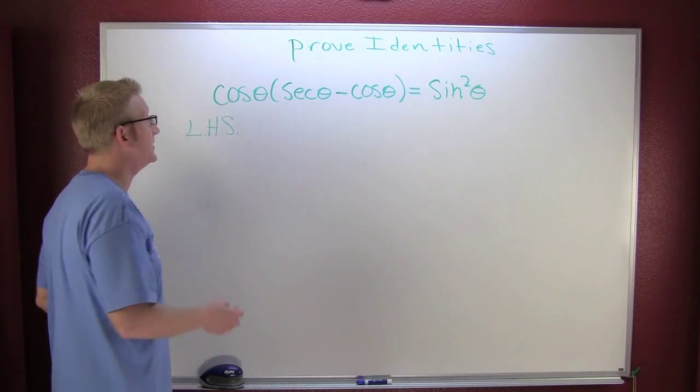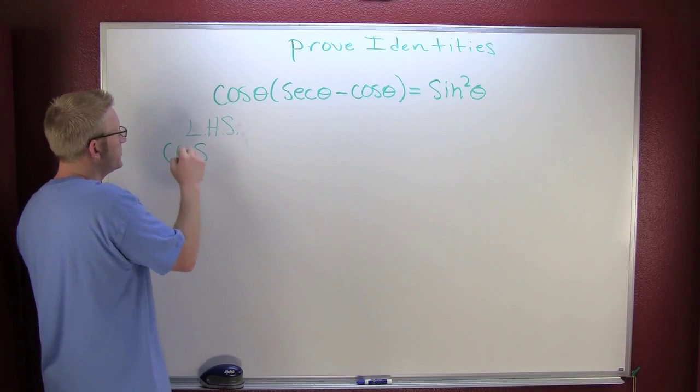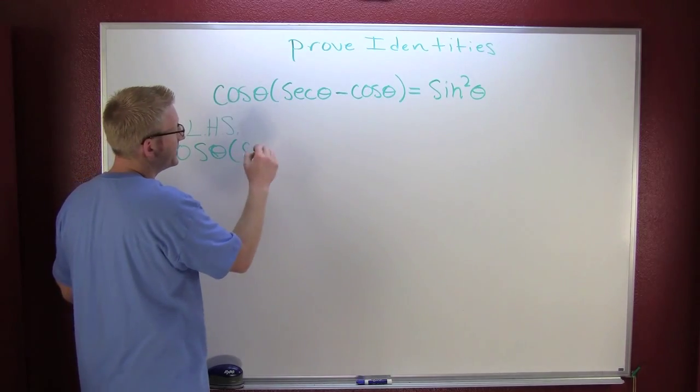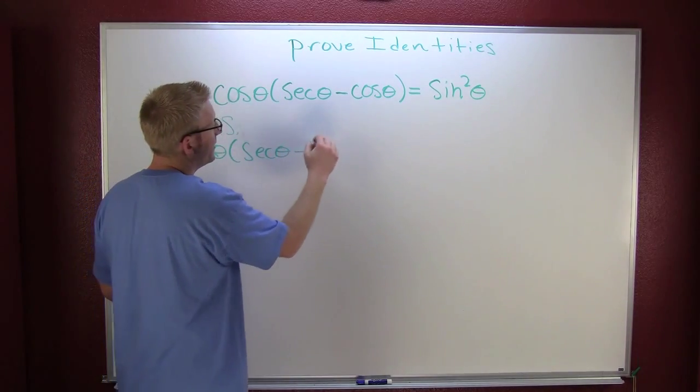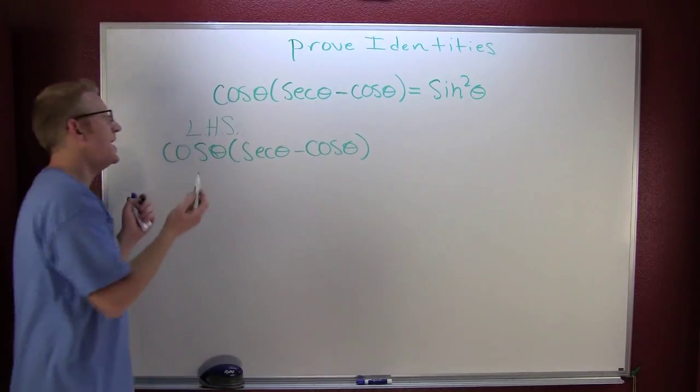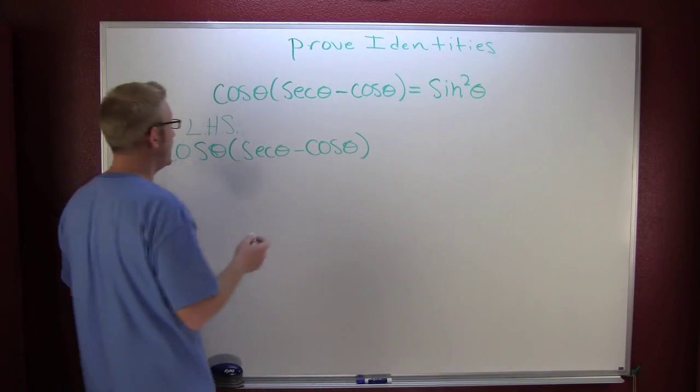On the left hand side, I'm going to write this down. That's the cosine of theta times the secant theta minus the cosine of theta. And then these things distribute algebraically, yeah, just like you're used to from back in the day.